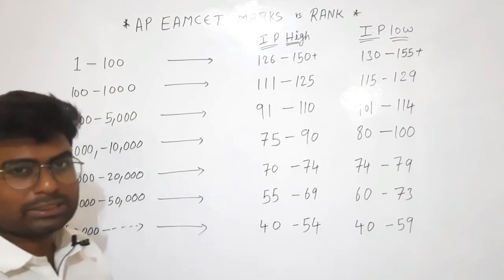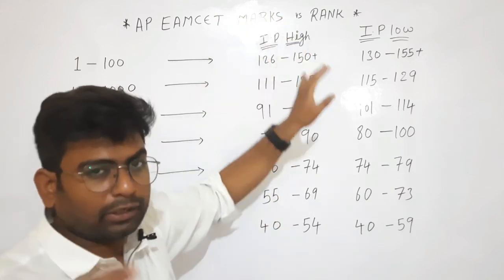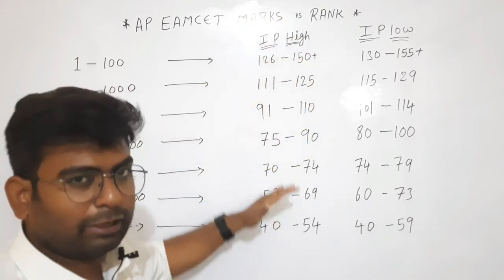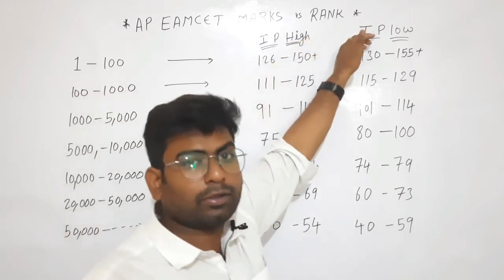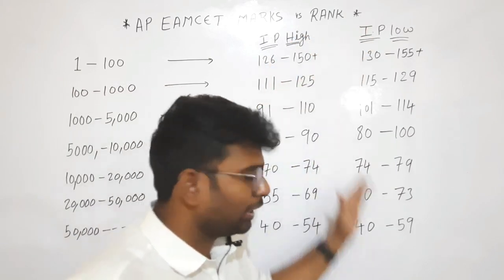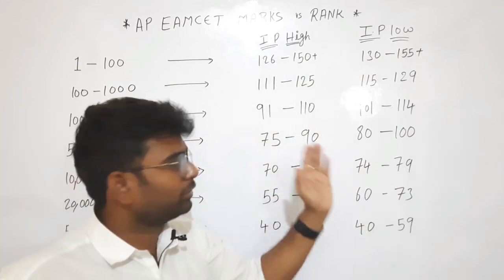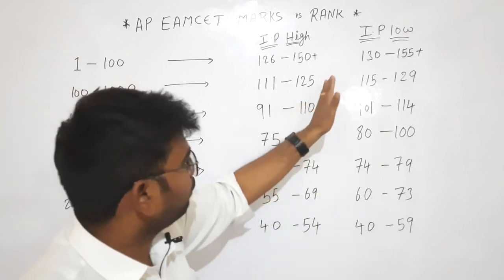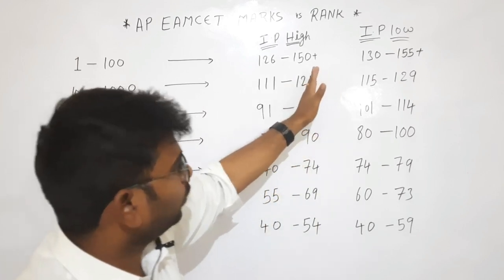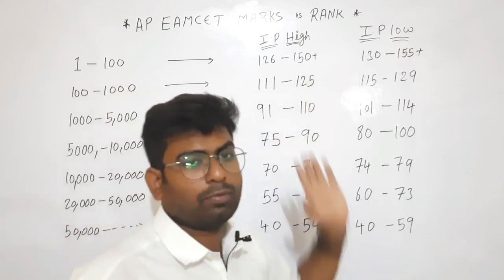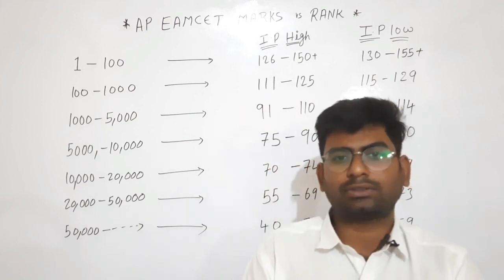So, if you look at the difference between IP marks and M-set, you will get a better rank. This is the marks versus rank breakdown.